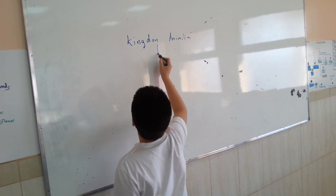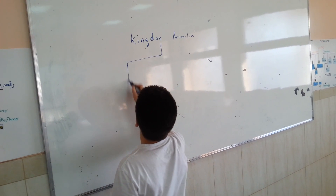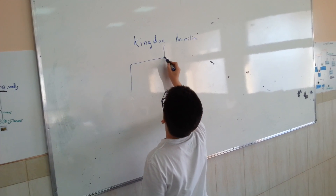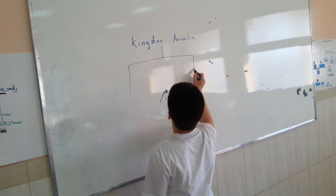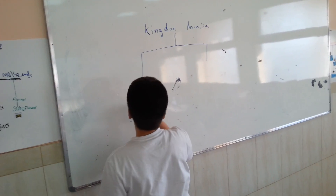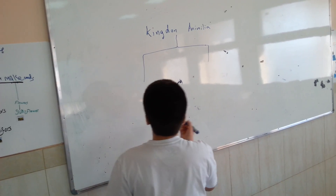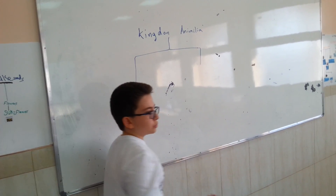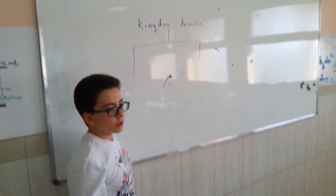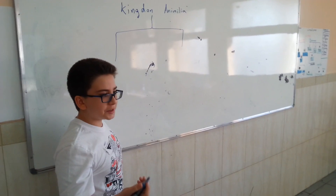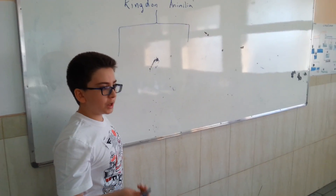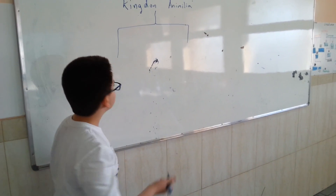Then we are going to classify it into two groups: vertebrates and invertebrates. Vertebrates are animals with backbones. Invertebrates are animals without backbones.